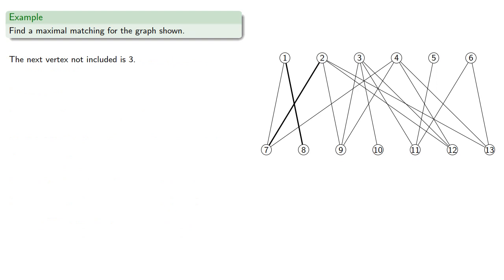The next vertex not included is 3. The lowest-numbered vertex adjacent to 3 is 9 via the edge 3-9, which is not included in our matching, so we include it.